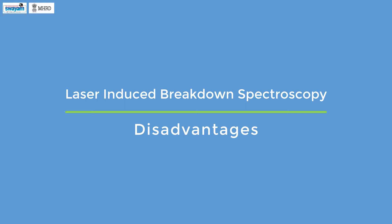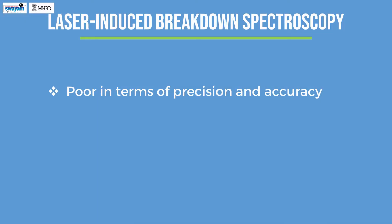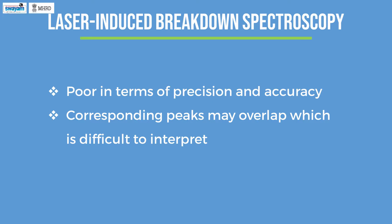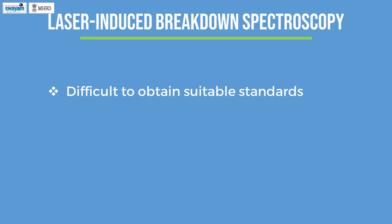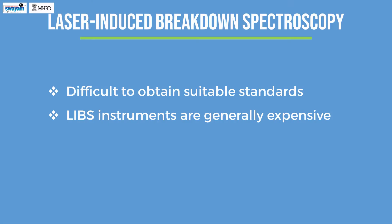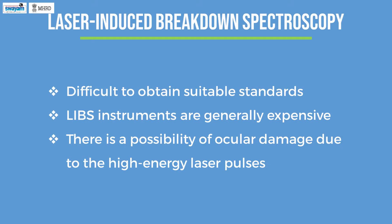Disadvantages of LIBS: LIBS analysis is poor in terms of precision and accuracy. A typical LIBS spectrum will have several peaks if the sample contains several elements, and the corresponding peaks may overlap, which is difficult to interpret. Detection limits are generally not as good as compared to ICP-AES techniques. Sometimes it is difficult to obtain suitable standards required for quantitative analysis. LIBS instruments are generally expensive, especially due to the laser source; however, portable LIBS instruments are relatively cheaper. Over time, there is a possibility of ocular damage due to the high energy laser pulses.